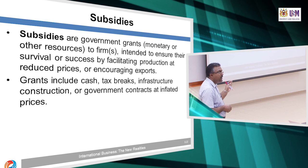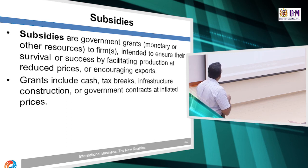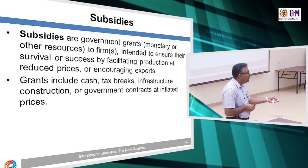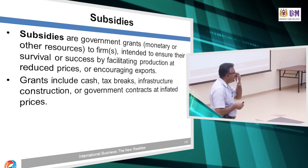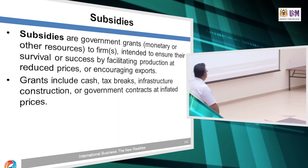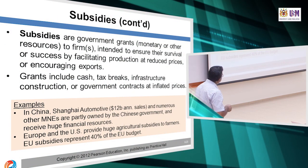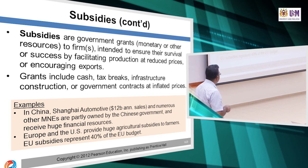Subsidies are government assistance in terms of monetary or other resources — for example, providing seeds or fertilizer for farming, or monetary incentives to help the industry. In China, Shanghai Automotive and numerous other companies are partly owned by the Chinese government and receive huge financial resources. Europe and the US provide huge agriculture subsidies to farmers. EU subsidies represent 40% of the EU budget.